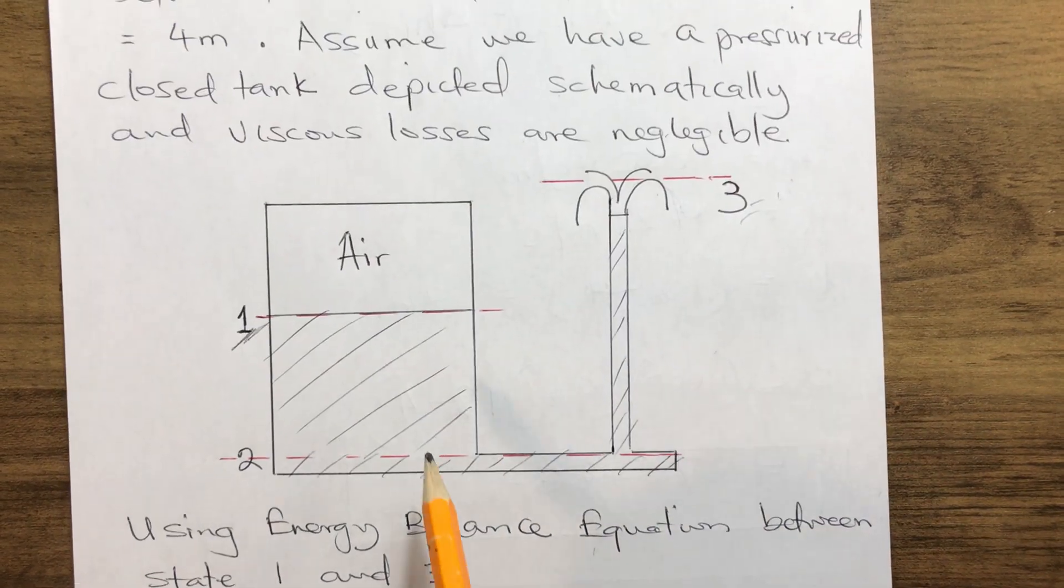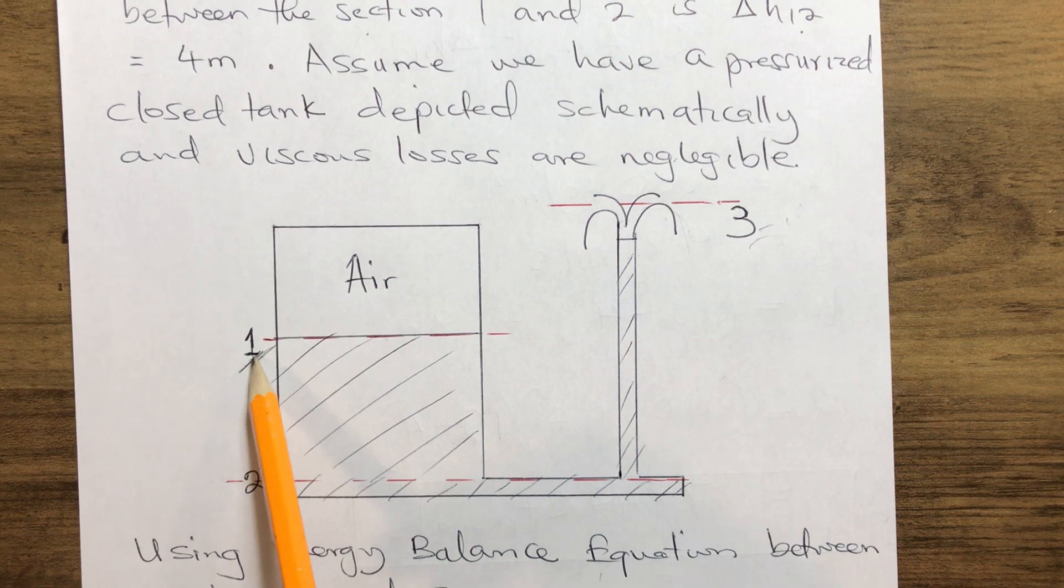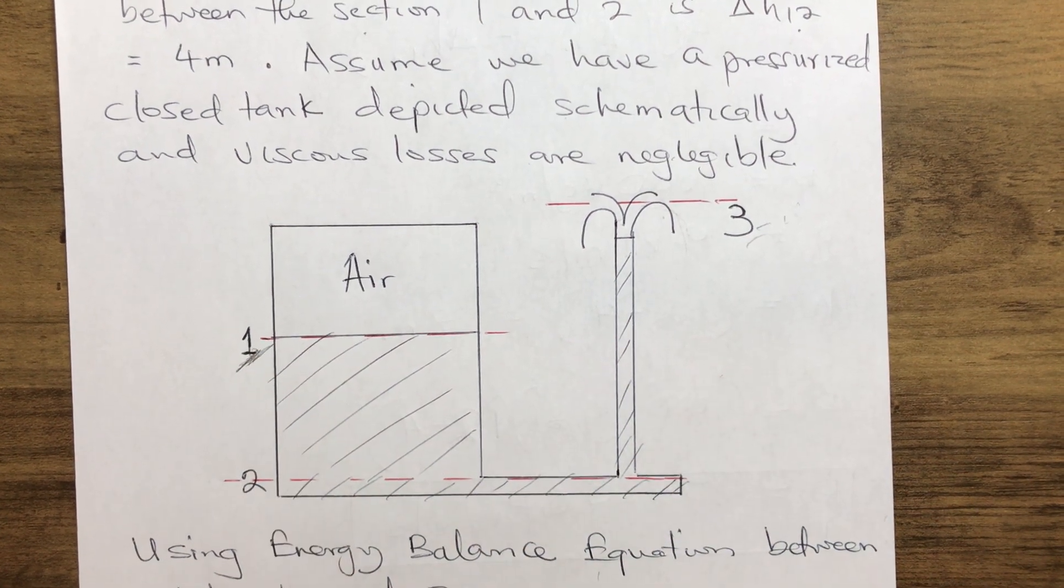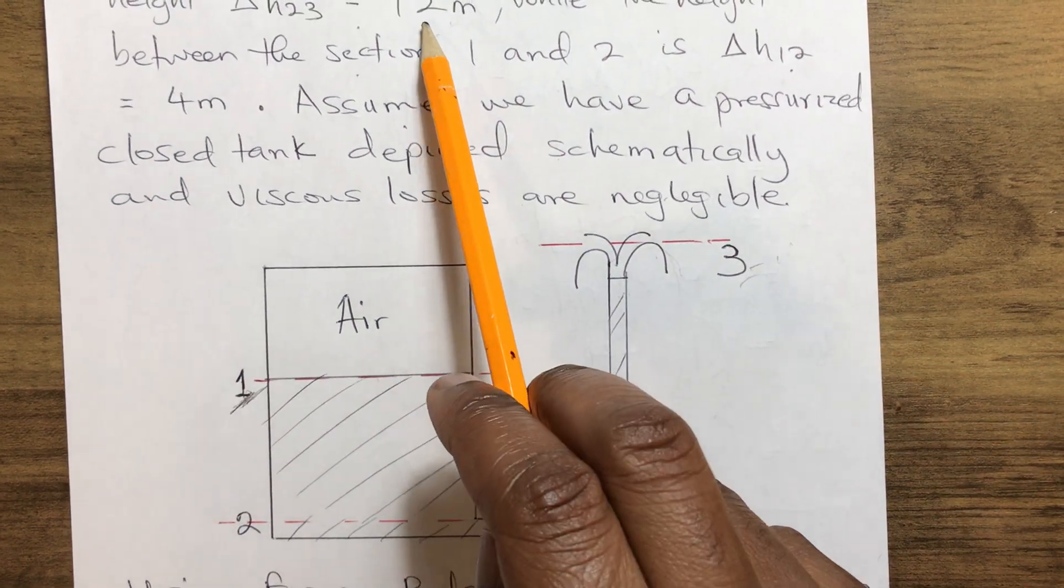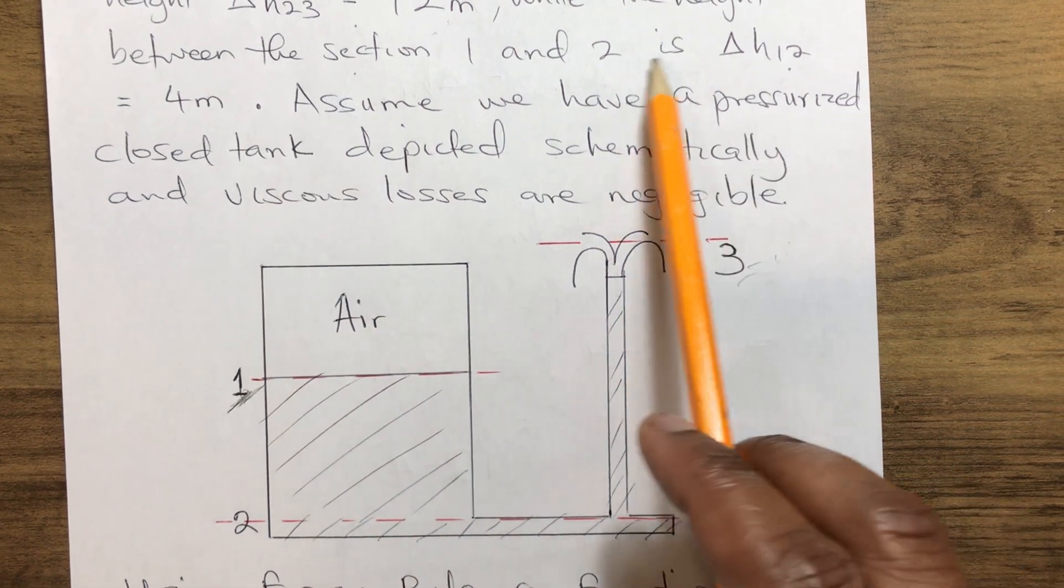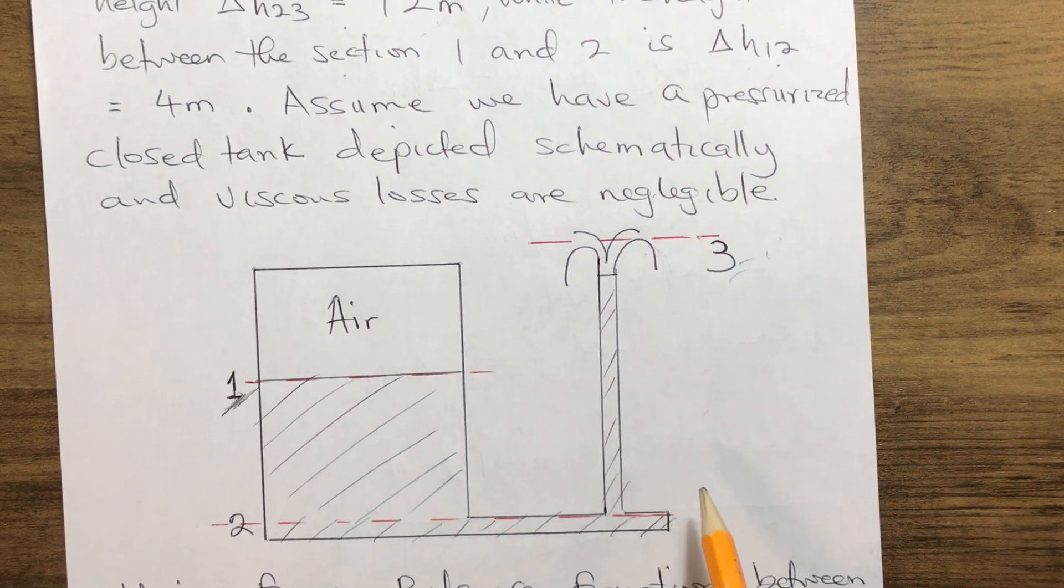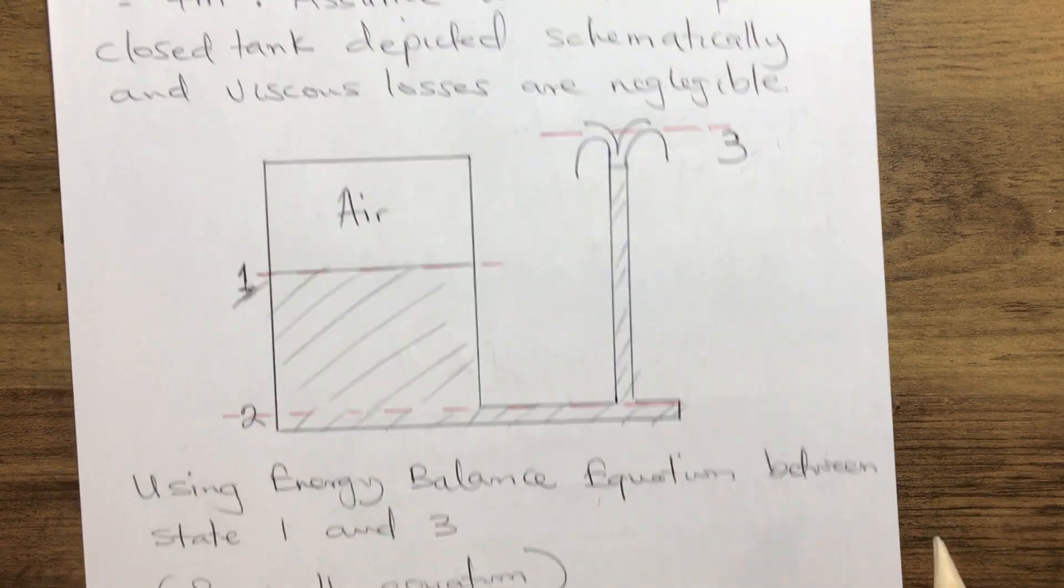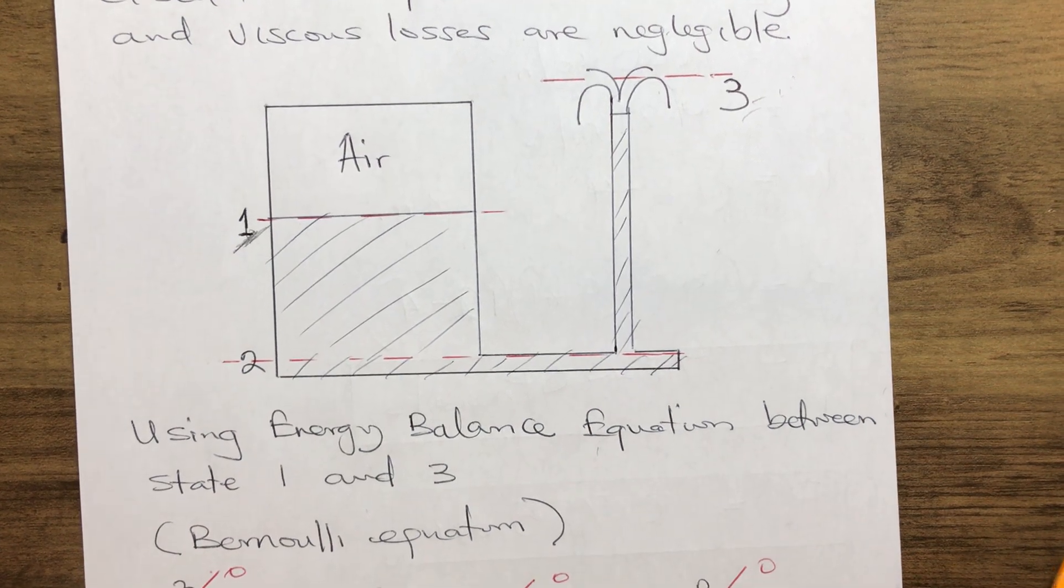Now in order for us to find the pressure at P1, since we are given the height of 2 to 3 and we are given the height of 1 to 2, how do we find the pressure one?